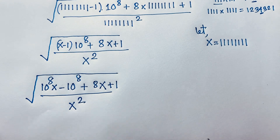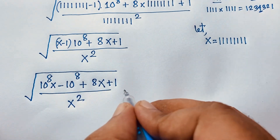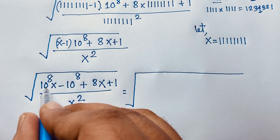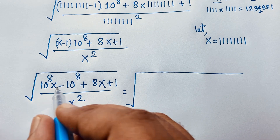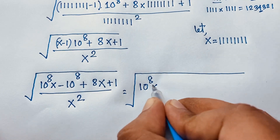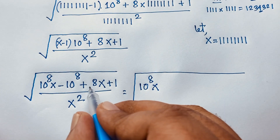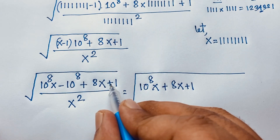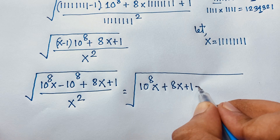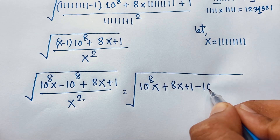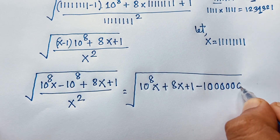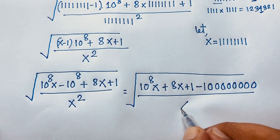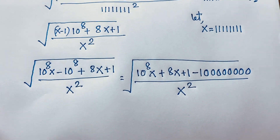Now at this moment you can see — if I simplify — then you can see here is 10 to the power 8x, it will be 10 to the power 8x, and here is plus x. I take this plus 8x, and this is plus 1 — this one. But 10 to the power 8, you can see it will be minus — it is 8 zeros, 1 2 3 4 5 6 7 8 — over, and this expression it will be x squared.